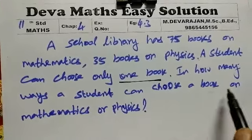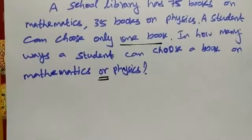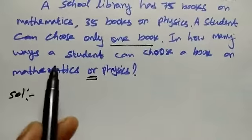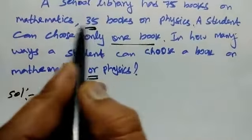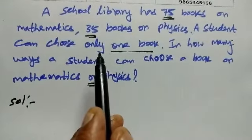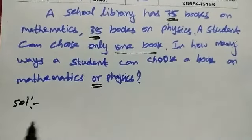many ways a student can choose a book of mathematics or physics? So there are 75 mathematics books, 35 physics books, and a student can only choose one book.